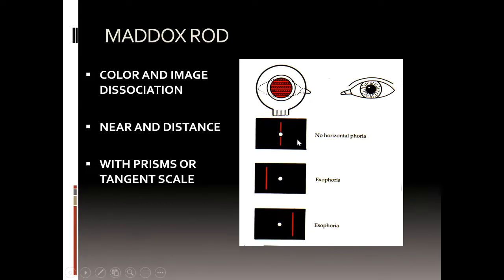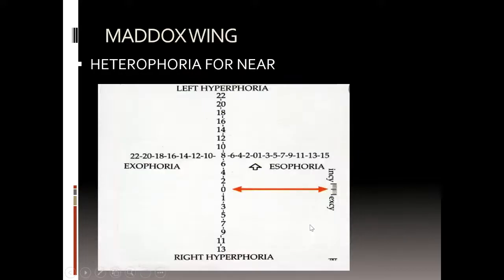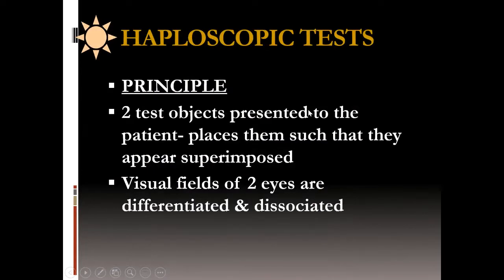Maddox rod is a beautiful test — it changes the focus of light into a streak. No deviation gives a horizontal line through the light. Exophoria means crossed diplopia; esophoria means uncrossed diplopia. Maddox wing — not many people use it, but see the beauty: for esodeviation, if the arrow points to any odd number it is eso; any even number is exo. For the vertical red arrow, even is right hyper, odd is right hyper — pure and simple. Such simplicity.